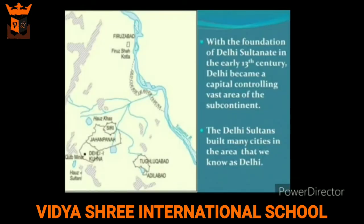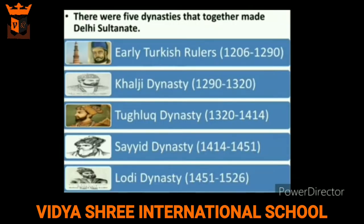With the foundation of the Delhi Sultanate in the 13th century, Delhi became a capital controlling a vast area of the subcontinent. The Delhi Sultans built many cities in the areas known as Delhi — for example, Siri and Jahanpanah. With the help of a diagram, let's understand that there were five dynasties that together made up the Delhi Sultanate.